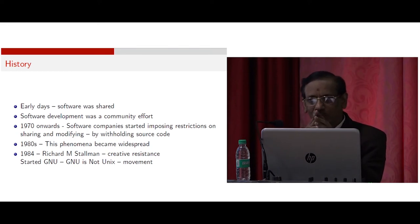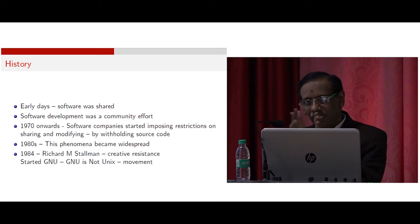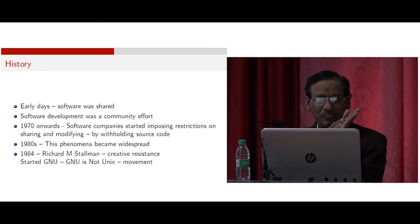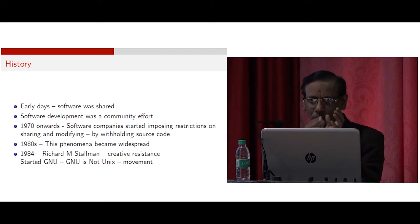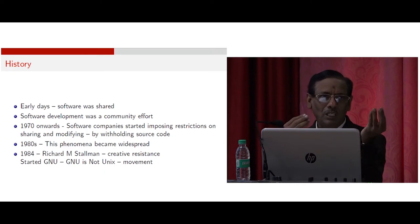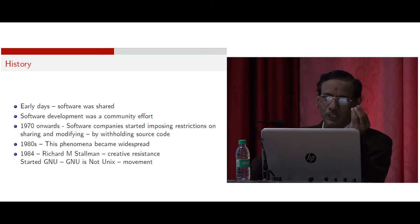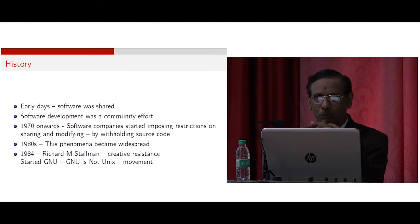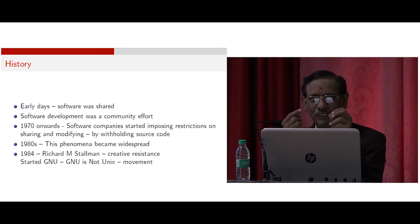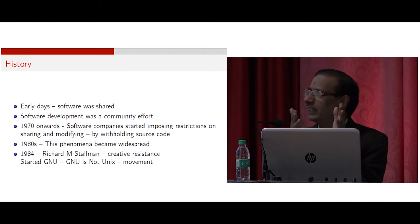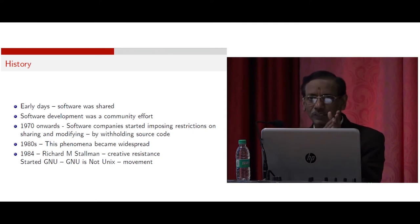Afterwards, mass production of computers started, but they were very costly. By the 1980s, desktop computers started arriving because of advancement in technology. First, vacuum tubes were used — at that time the computer was very bulky, a small computer less capable than today's mobile phone occupied an entire room. Later came integrated circuits and chips, and day by day the size reduced, and by the 1980s desktop computers started coming.